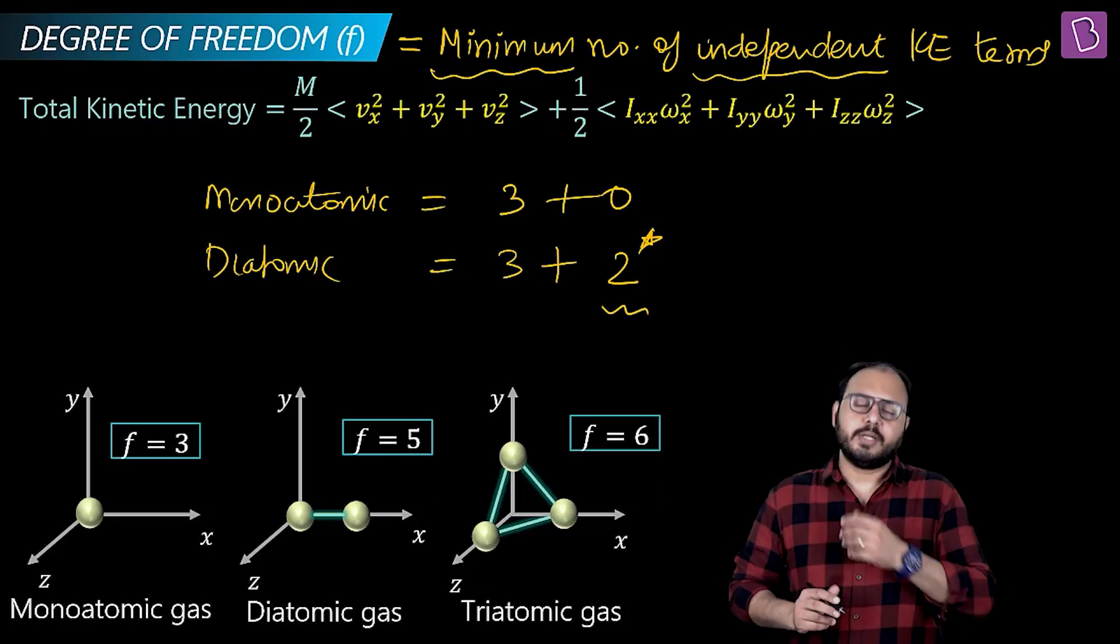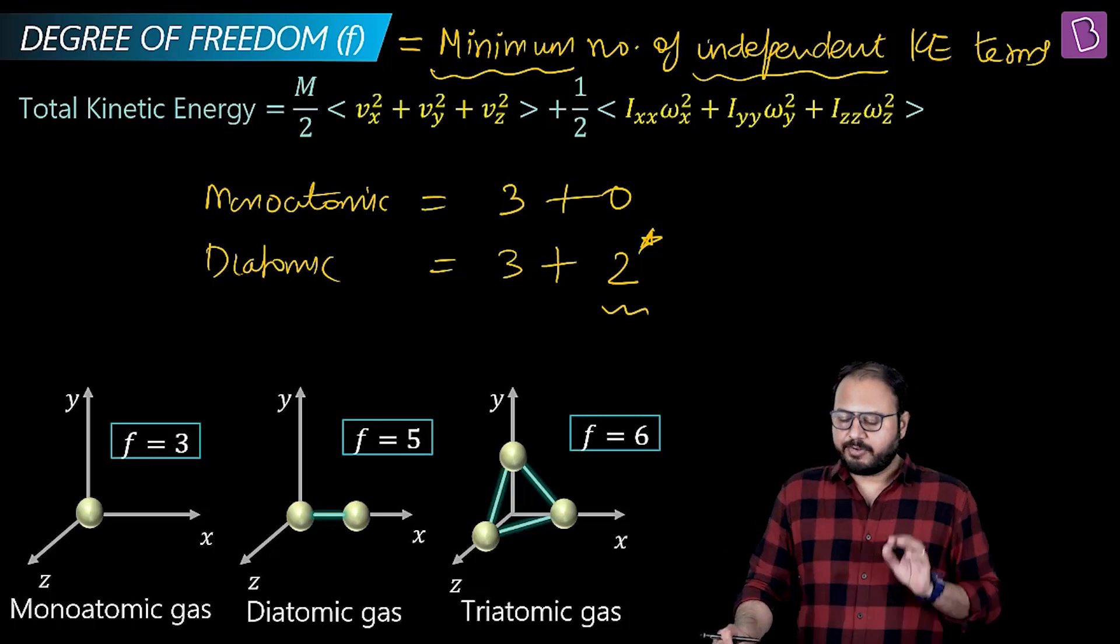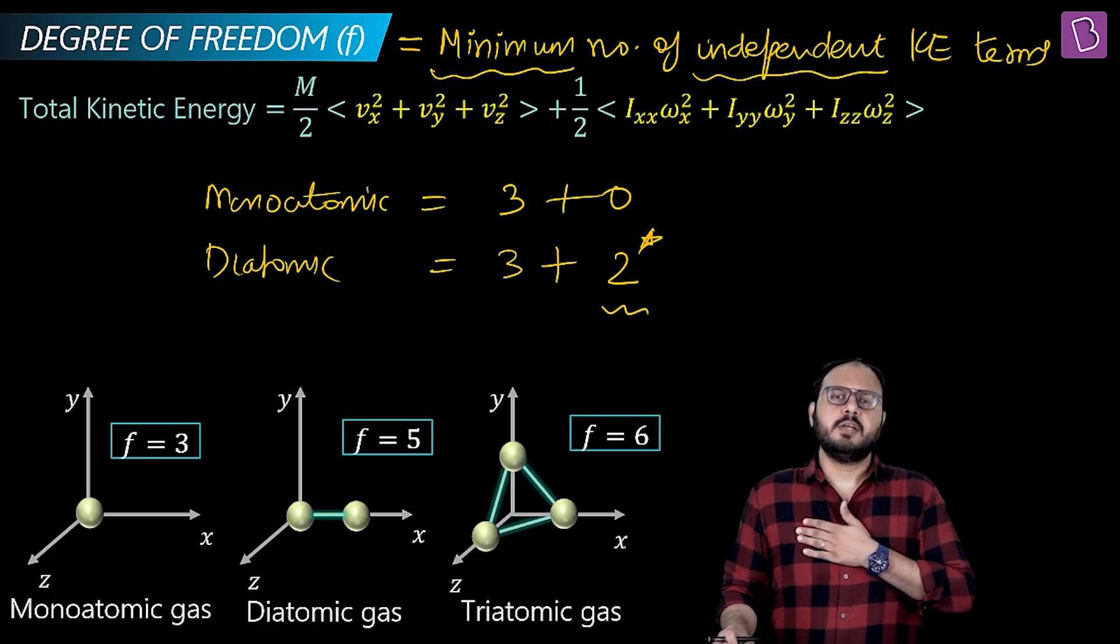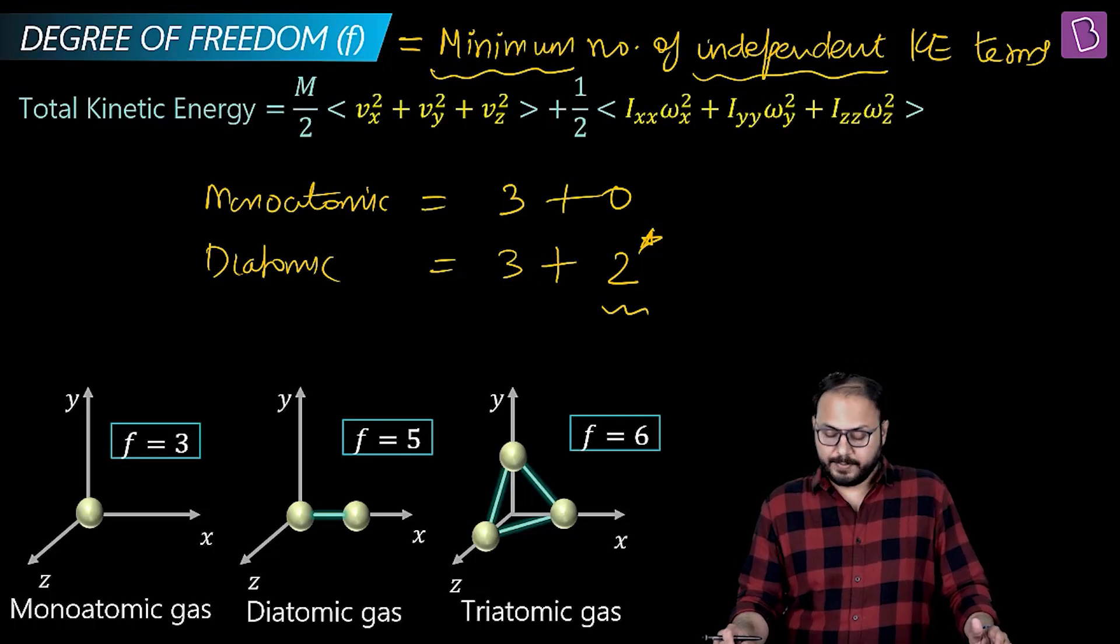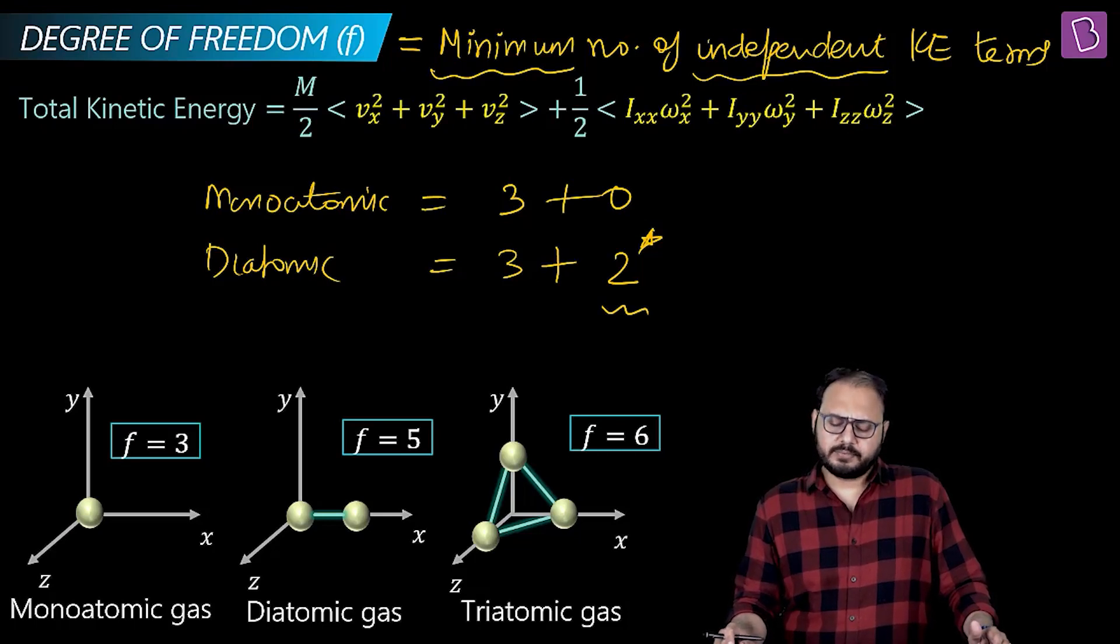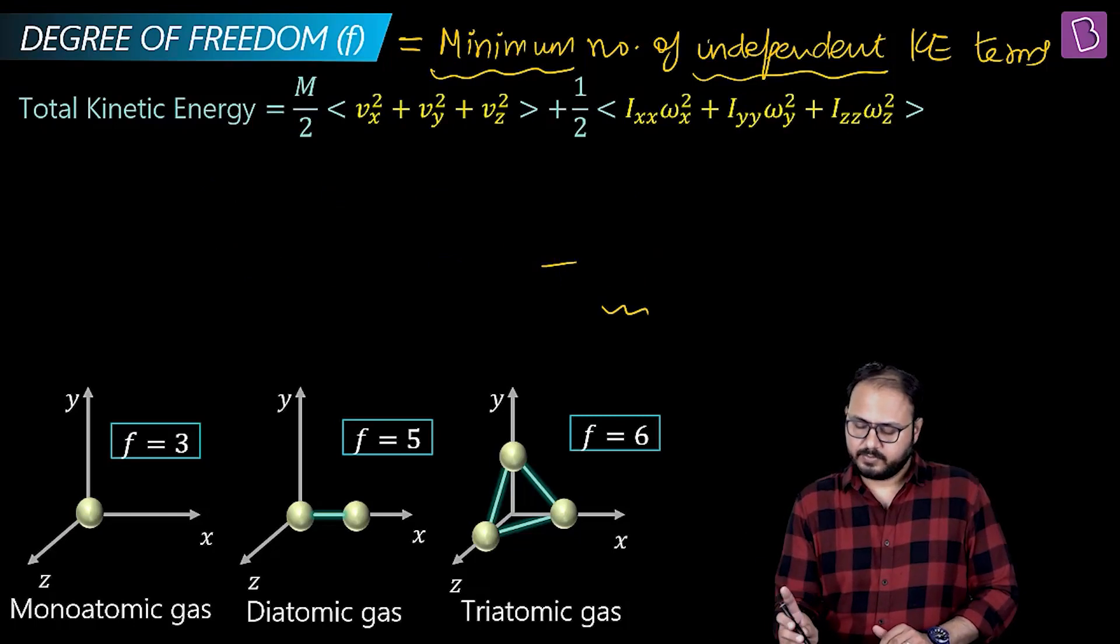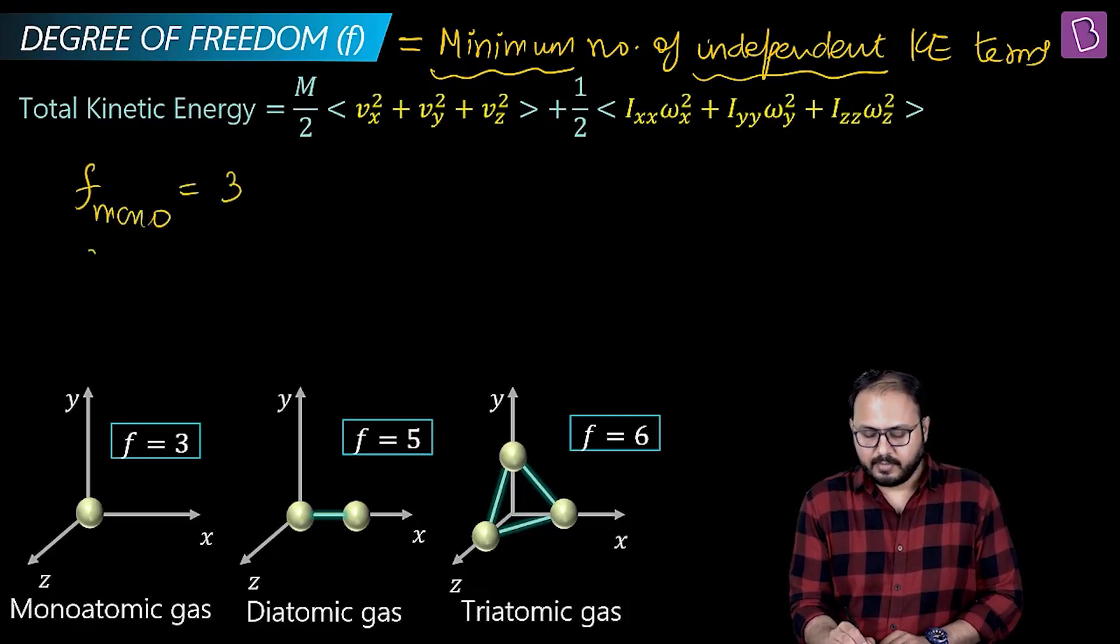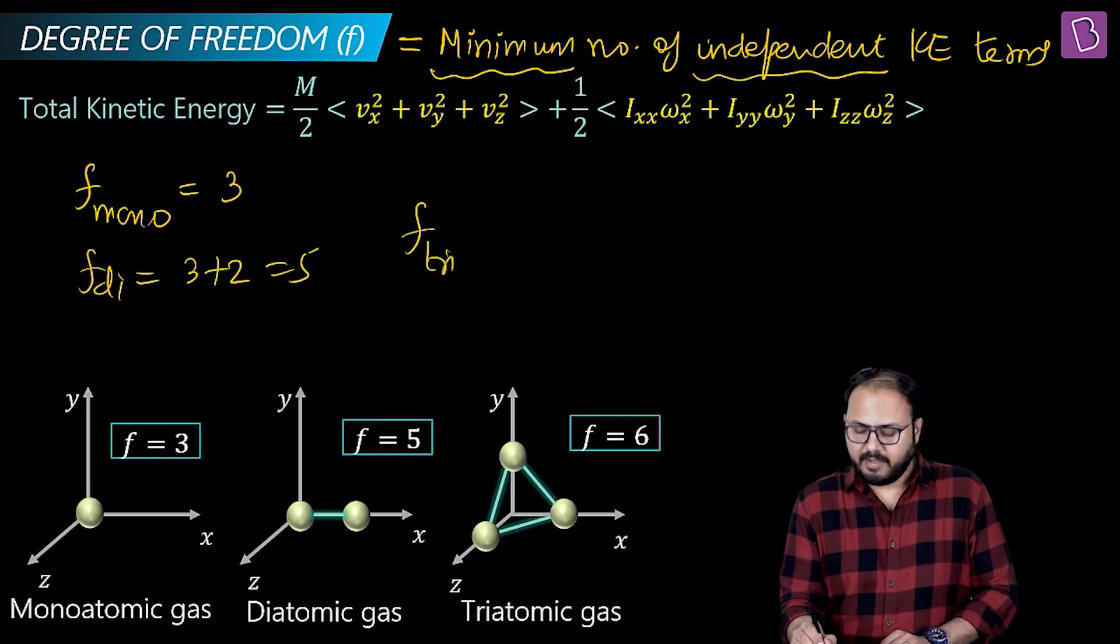Did you understand this or not? Degree of freedom is minimum number of independent kinetic energy terms. Just a fun fact: all triatomic gases will have six degree of freedom. You tell me. No sir, no. There is something missing here. Okay, let's see. F monoatomic: 3, agreed, 100 percent agree. F diatomic: 3 plus 2 equals 5, agreed. F triatomic: so six. How about five or six?